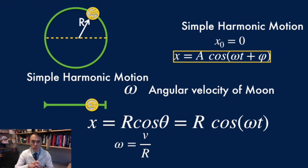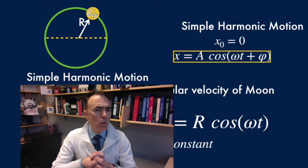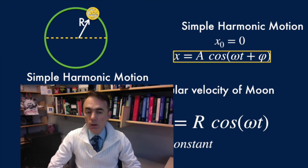Look that this is true because omega is constant. That is, because the speed of the moon is constant. What other simple harmonic motions can you think of? May science be with you.